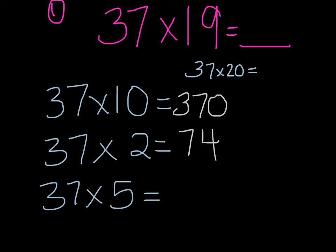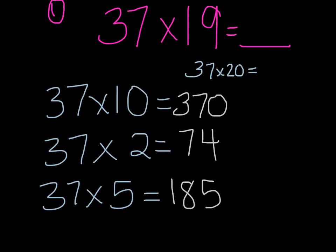I got 74 by doubling 30 to get 60 and doubling 7 to get 14. Or you can use repeated addition: 37 plus 37. But mentally, doubling is easier. Then for 37 times 5, the answer is 185. Another way to figure that out is to use 37 times 10, because half of 10 is 5. So half of 370 gives me 185, because 37 times 10 just needs to be halved to give 37 times 5.